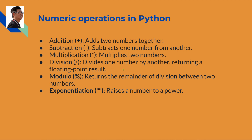A floating point number. The modulo operator is the percent sign. It returns the remainder of division between two numbers — what we call the remainder.